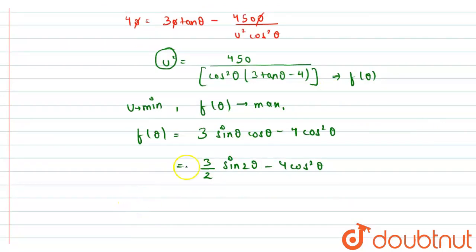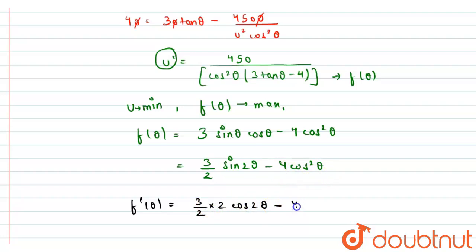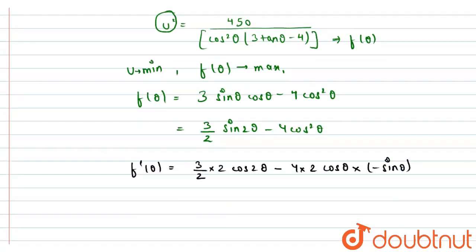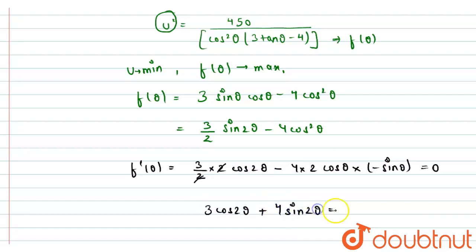To maximize f(θ), we differentiate: f'(θ) = (3/2)·2·cos2θ − 4·2·cosθ·(−sinθ) = 3·cos2θ + 4·sinθ·cosθ. The 2's cancel and 2sinθcosθ = sin2θ, so f'(θ) = 3·cos2θ + sin2θ = 0. Setting this equal to zero to find θ.